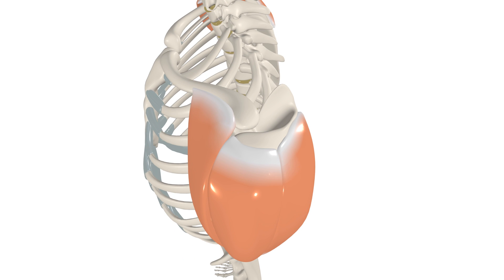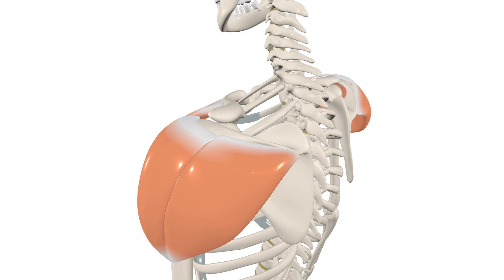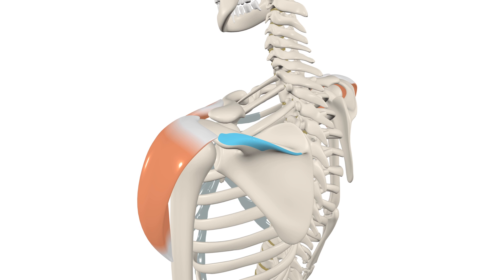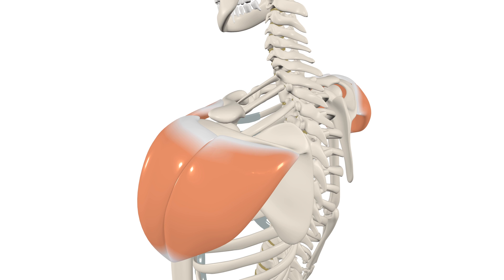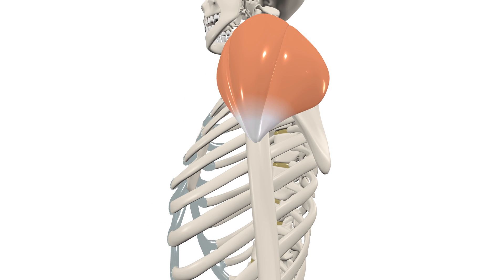The anterior head arises from the anterior border of the lateral third of the clavicle. The middle head arises from the acromion, which is this bony prominence coming from the superolateral margin of the scapula. And the posterior head arises from the spine of the scapula, as you can see here. From these origins, the fibres converge together and insert as a single tendon at the deltoid tuberosity of the humerus.